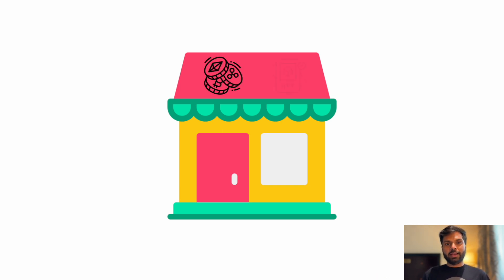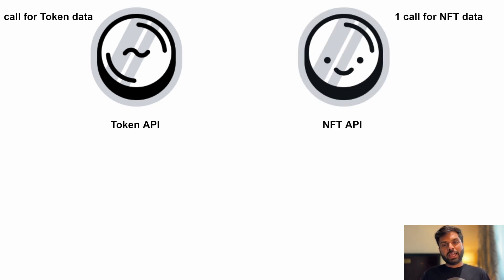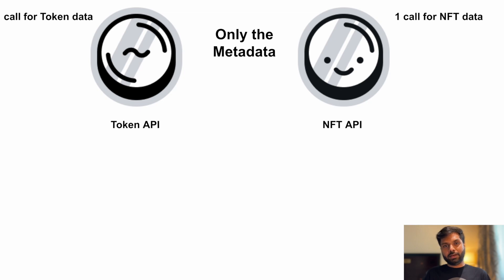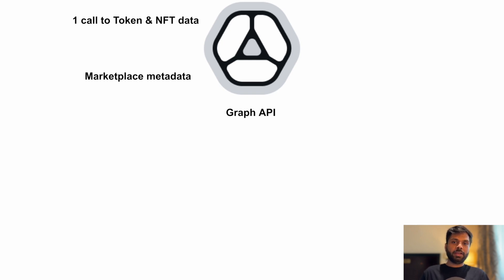Let's understand this with the help of an analogy. Say you want to make a marketplace platform that displays ERC20 tokens and NFTs. With Quicknode's RPC API, you would have to make one call to the token API to get ERC20 data and another call to the NFT API to get NFT token metadata. But with Quicknode's GraphQL API, you can get NFT data and ERC20 data all in one single call. You can also get marketplace metadata like OpenSea's metadata, and historical analytical data.